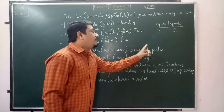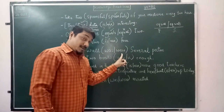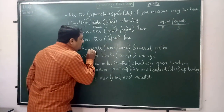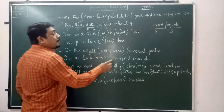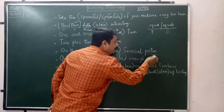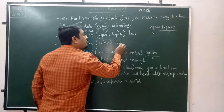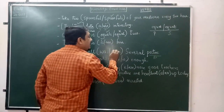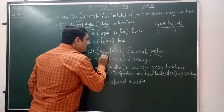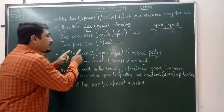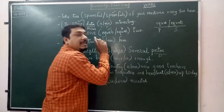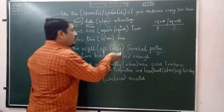'On the wall was / were several posters.' Now the word 'were' may seem singular here, but 'posters' is plural — 'several posters'. The verb changes according to 'posters', which is plural. So 'was' (singular) should be replaced by 'were' (plural). The right answer is 'on the wall were several posters', not 'was'.